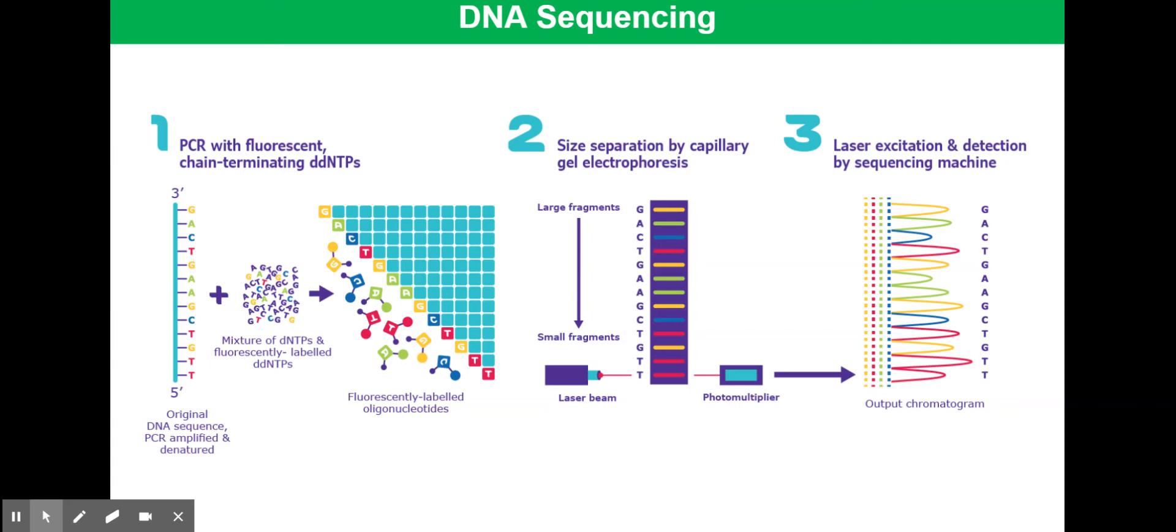So if the first one base fragments had thymine at the end, then the first base in the sequence was T. If the two base fragments had cytosine at the end, then the sequence was T, C, and so on.